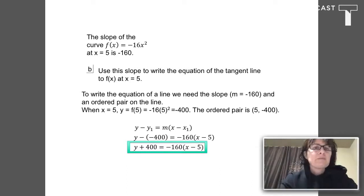So I'm going to plug my X value, 5, into my formula, negative 16 X squared, to get the Y value. So now I have my ordered pair. I can use my slope of negative 160 and write the equation for the tangent line.